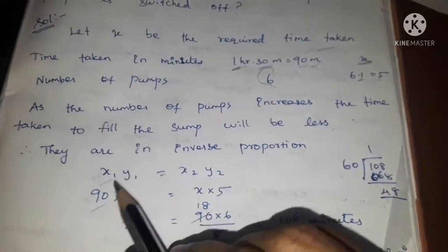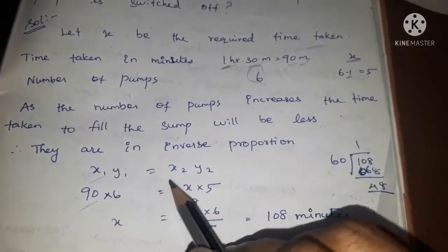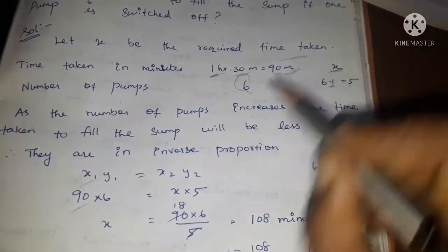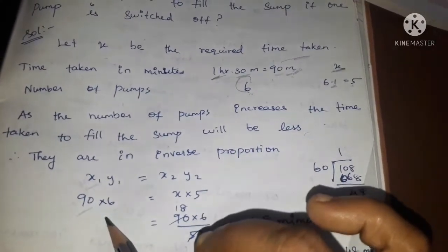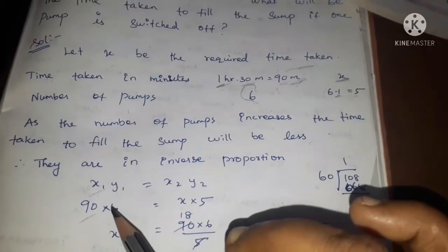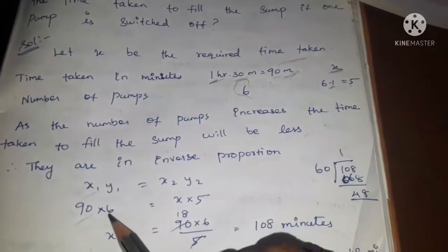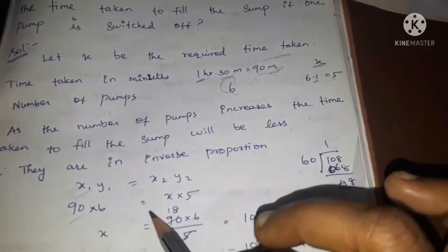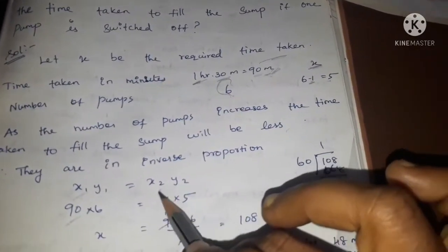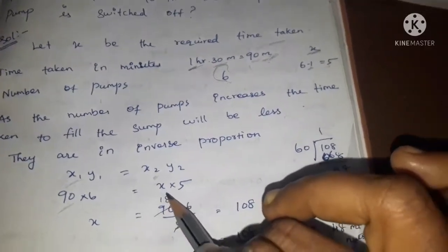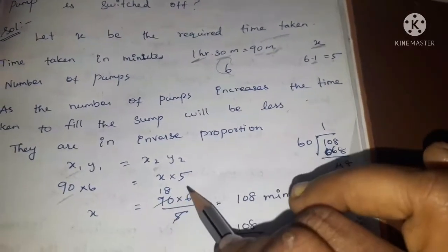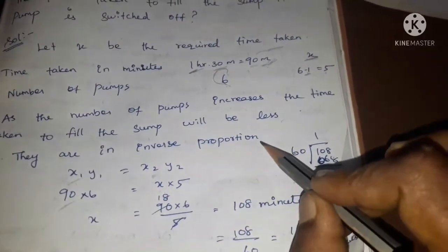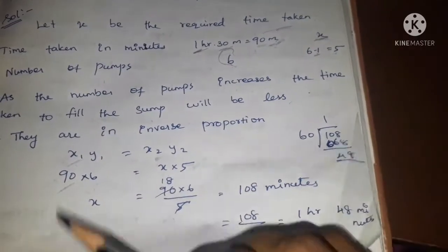Inverse proportion formula: x1 into y1 equal to x2 into y2. So x1 value is 90 minutes, y1 is 6 pumps. One pump is switched off, so balance is 5 pumps. x2 equals 5.